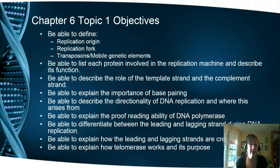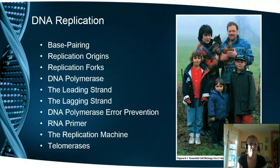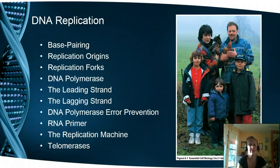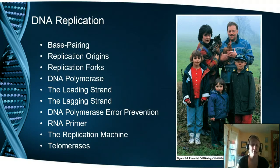So first we have our objectives — as always, these are what I expect you to have mastered before our next exam, so please let me know if you have any questions. This topic is all about DNA replication and the main points we're going to cover are: base pairing, replication origins, replication forks, DNA polymerase, the leading strand, the lagging strand, error prevention, the RNA primer, and then we're going to review the whole thing and wrap up with telomerases.